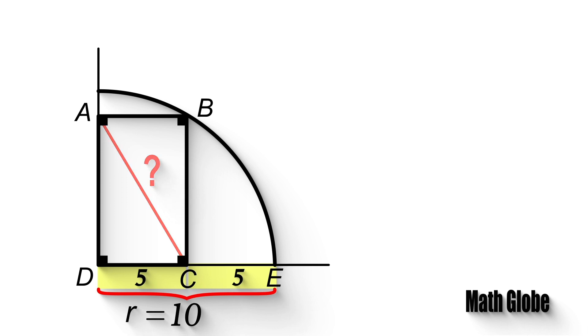Next, we draw the other diagonal of the rectangle. From this, we clearly note that shown diagonal is the 10 units radius of the circle.